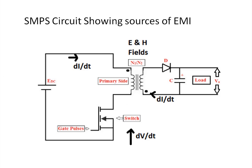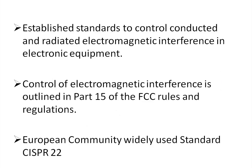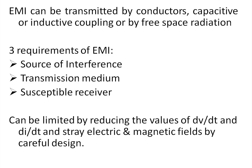In this circuit showing typical sources of electromagnetic interference, the rate of change of voltage and the rate of change of current in the primary and secondary will generate EMI. There are established standards to control both conducted and radiated EMI in electronic equipment. Control of EMI is outlined in Part 15 of FCC rules and regulations. Another widely used standard is CISPR 22, commonly used in the European community.